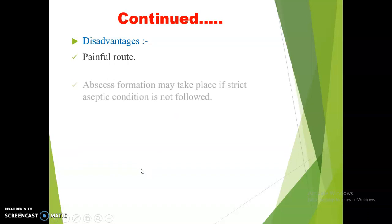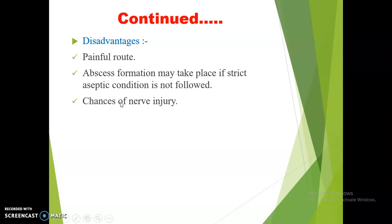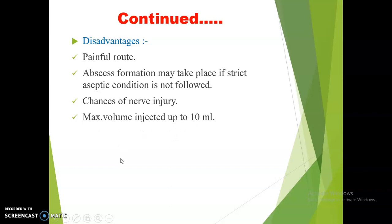Disadvantages of the intramuscular route: among all injections, intramuscular injections are the most painful, as they require a heavy needle held at a 90-degree angle. If strict aseptic conditions are not followed, there are chances of abscess formation. If the drug is not given at the proper site and enters a nearby nerve rather than the muscle, there is risk of nerve injury, sometimes leading to permanent nerve damage. The maximum volume that can be injected is up to 10 ml.